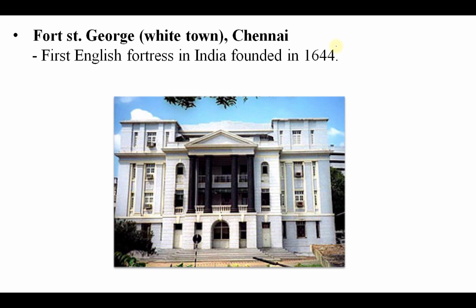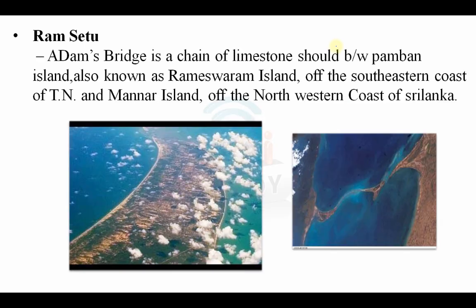Fort St. George was the first English fortress built by the British in 1644 and is also known as the White Town. It is in Chennai. Ram Setu, also known as Adams Bridge, is a chain of limestone made between Pamban Island (also known as Rameshwaram Island) off the southeastern coast of Tamil Nadu, and Mannar Island off the northwestern coast of Sri Lanka.